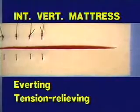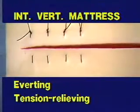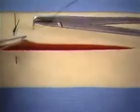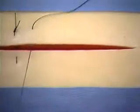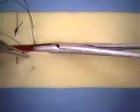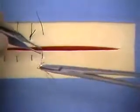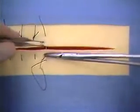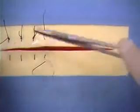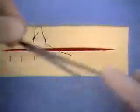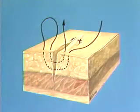The eighth pattern to be demonstrated is the Interrupted Vertical Mattress Suture. This is an everting and tension relieving suture pattern. The vertical mattress suture is introduced eight to ten millimeters from the incision on one side, passed across the incision line, and made to exit an equal distance on the opposite side. The needle is then reversed and returned perpendicular to the incision line to the opposite side by passing four millimeters from the incision on both sides. The knot is tied on the side of origin.